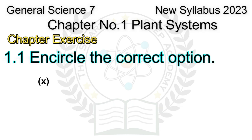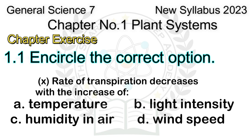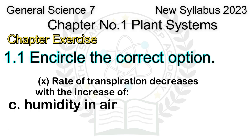Question 10: Rate of transpiration decreases with the increase of: A. Temperature, B. Light intensity, C. Humidity in air, D. Wind speed. Answer: C. Humidity in air.